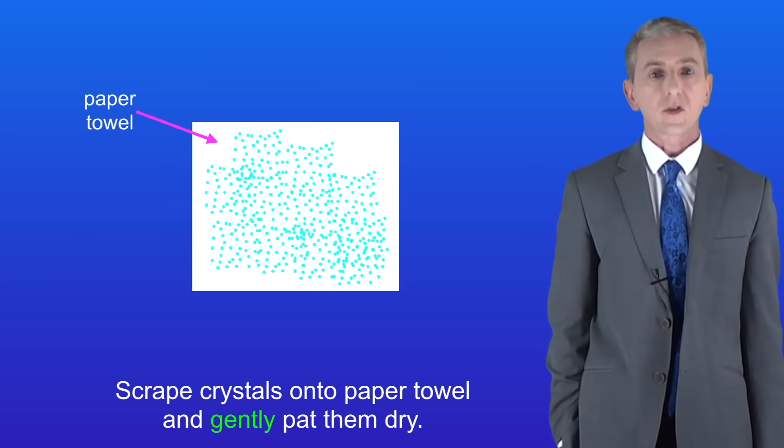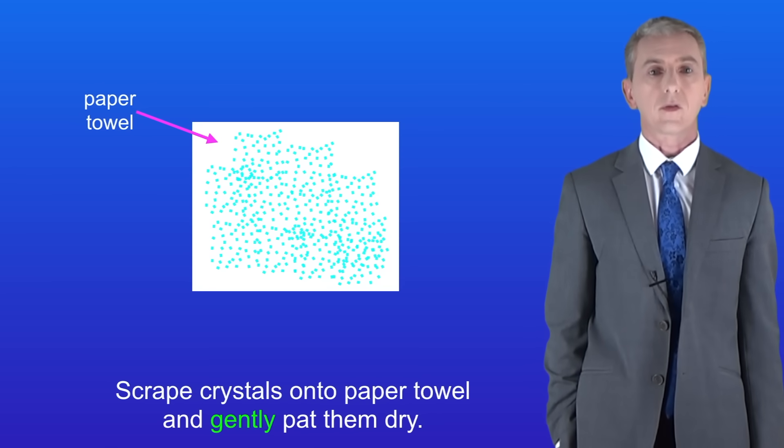Finally we scrape the copper sulphate crystals onto paper towel and we gently pat them dry. Now we have pure dry crystals of our copper sulphate.